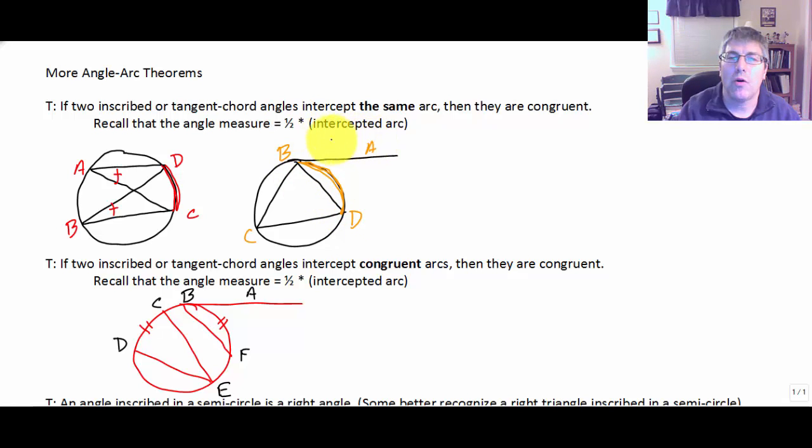Of course, if their formulas are the same, then we should get the same answer, and of course we do. So we would know that this tangent chord angle and angle C, this inscribed angle, are congruent because they intercept the same arc.